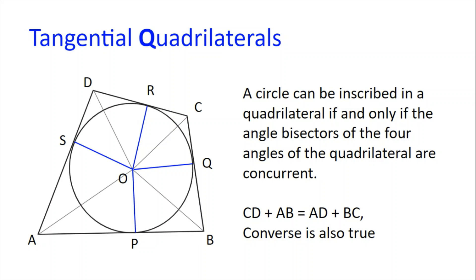Consider triangles OSA and OAP. OS is equal to OP because they are both radii of the same circle. SA is equal to AP from the two tangents theorem. They both share the same side AO, and they are both right angle triangles. So these triangles are congruent, and so angle SAO is equal to angle OAP, and so OA bisects angle A.